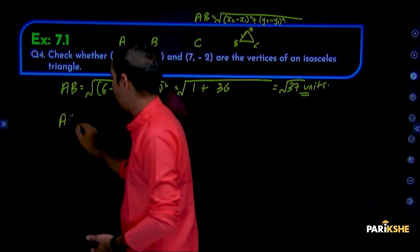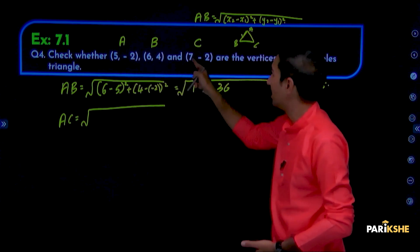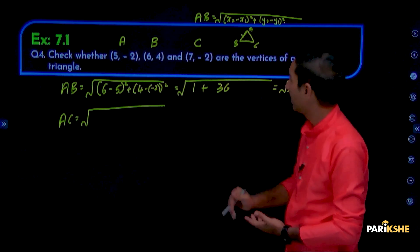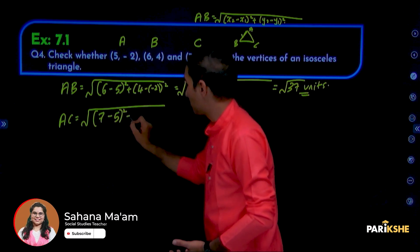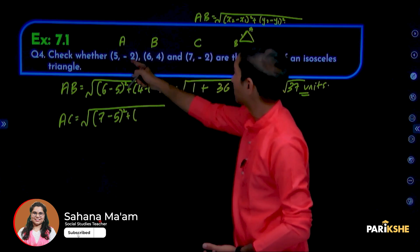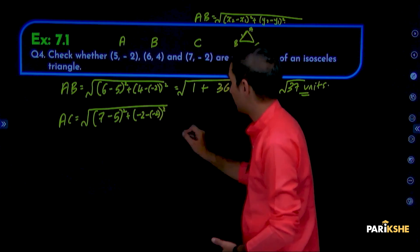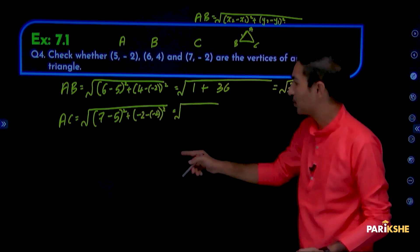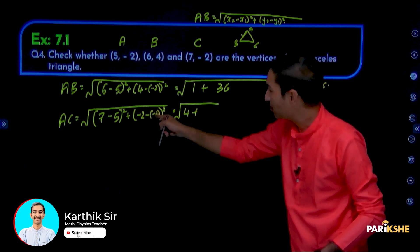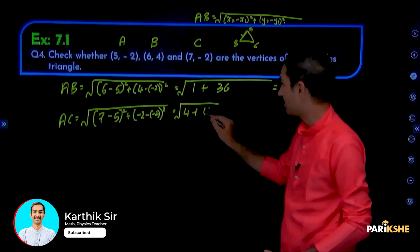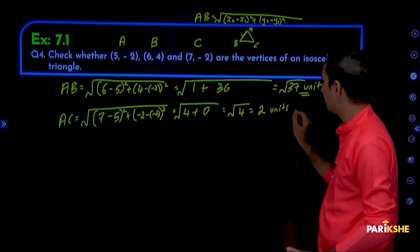Next, AC. A is (5, -2), C is (7, -2). AC = √((7-5)² + (-2-(-2))²) = √(2² + 0²) = √(4 + 0) = √4 = 2 units.